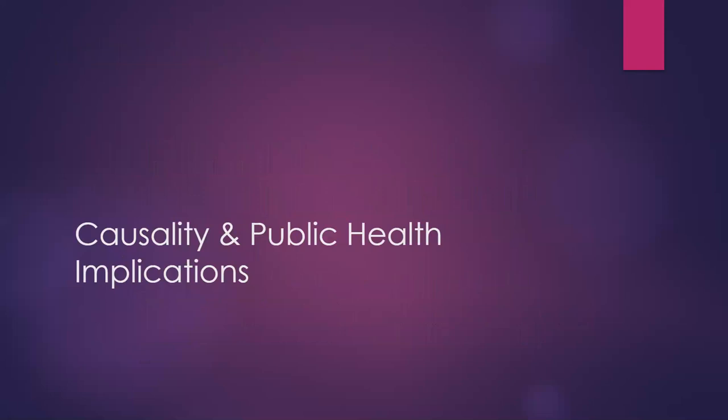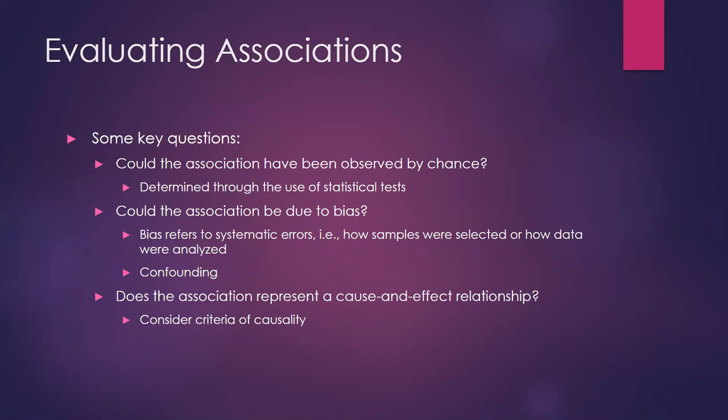After going through the technical aspects of reviewing a study, we come to the public health implications. The overarching questions are: could the association have been observed by chance — statistical tests help answer that; is there bias at play, from the sample or from failing to account for confounding variables; and finally, do we think there's a cause-and-effect relationship that we should act on from a public health perspective?